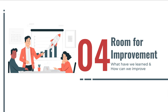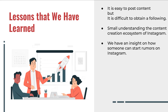Now we will be talking about Section 4: room for improvement for our Instagram page. Here are some things we learned. It is easy to create an Instagram account and post content, but it is difficult to obtain a following to interact with said content. We have a brief idea of the content creation ecosystem of Instagram. We also have an insight into our opponents, the rumor millers — we can understand how they function, as their operation is similar to ours.